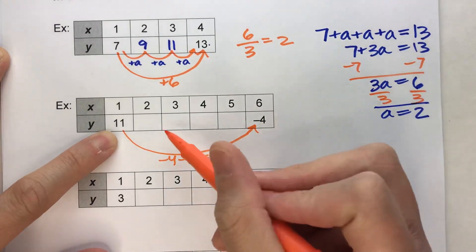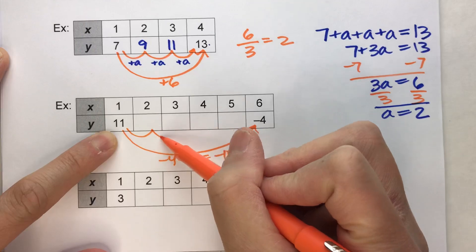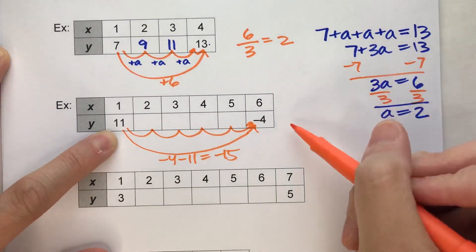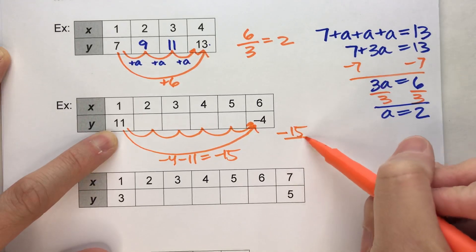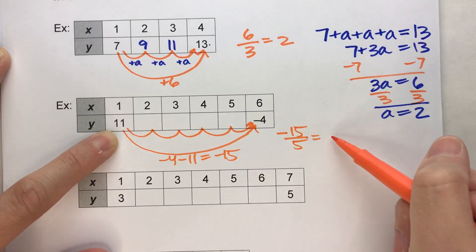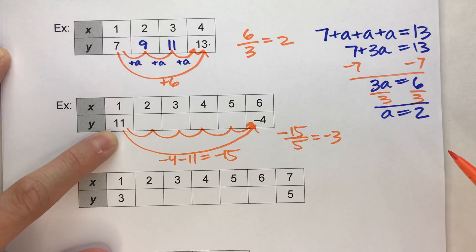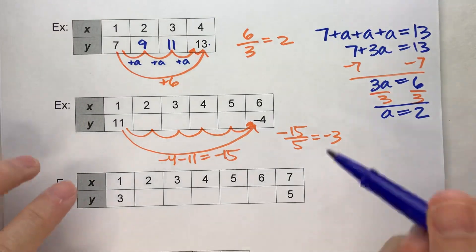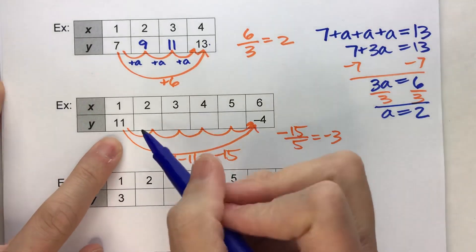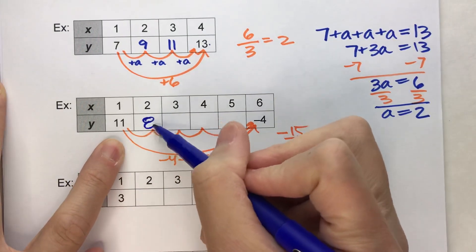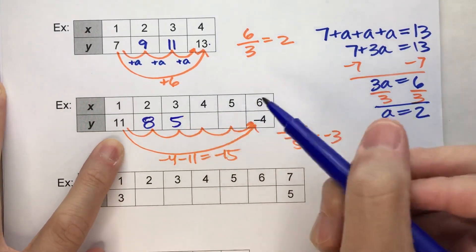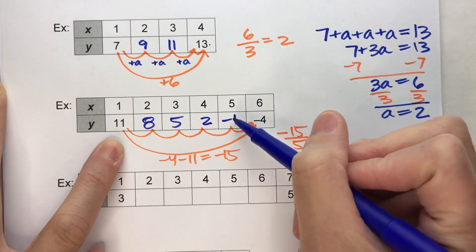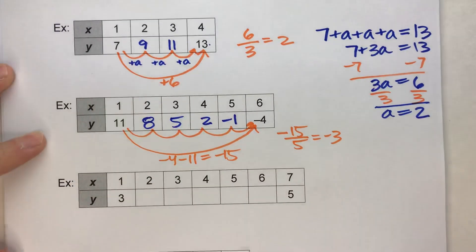And it decreased by 15 in 1, 2, 3, 4, 5 steps. So if it decreased by 15 in 5 steps, divide it, I get negative 3. So that's telling me that this is going to go down by 3 every single time. So let's try it. 11 minus 3 is 8. 8 minus 3 is 5. 5 minus 3 is 2. 2 minus 3 is negative 1. Negative 1 minus 3 is negative 4. There you go.